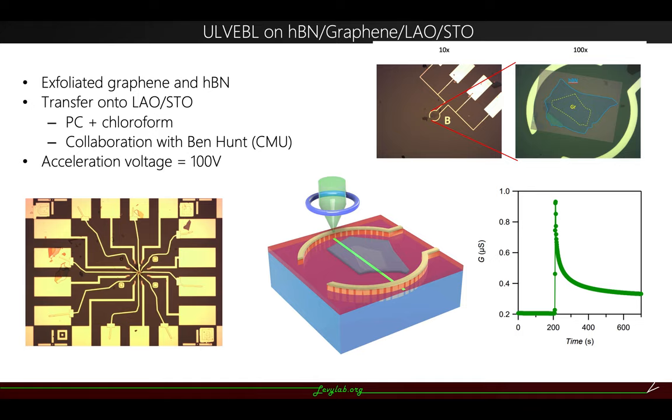And most recently, we also integrate with the boron nitride graphene stacks with exfoliated graphene and boron nitride, which will provide better quality of the graphene itself, and transferred it onto the LAO-STO using PC and chloroform.